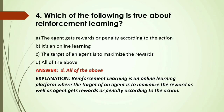MCQ: Which of the following is true about reinforcement learning? A) The agent gets reward or penalty according to the action; B) It is an online learning method; C) The target of an agent is to maximize the reward; D) All of the above. Answer: D, all of the above — reinforcement learning is an online learning platform where the target of the agent is to maximize the reward, and the agent gets reward or penalty according to the action.